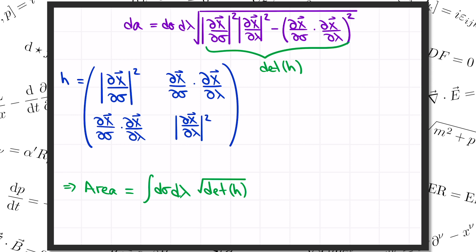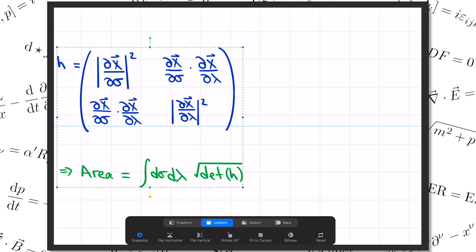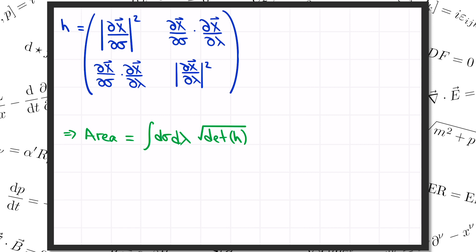Metrics tell us how to measure distances in a given space, so they naturally also tell us how to measure areas. So that was the math we needed to compute the area of a surface. Now let's get back to the physics. We were thinking of a bubble getting traced out in 3D space as you wave the wand around. Now it's a short step to go to the worldsheet of a little loop of string getting traced out as it evolves through spacetime. We only need to make a couple of modifications to write down the area of the worldsheet. First, instead of this three-component vector x giving us coordinates in 3D space, we need to replace it with the four-component vector x mu that gives us coordinates on spacetime, just like we used in the last lesson on relativity.